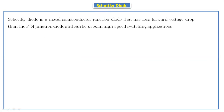A Schottky diode is a metal-semiconductor junction diode that has less forward voltage drop than the PN junction diode and can be used in high-speed switching applications. It has a less forward voltage drop when compared to the PN junction diode, and that's why it is used in high-speed switching applications.